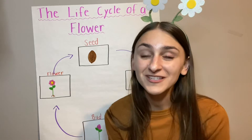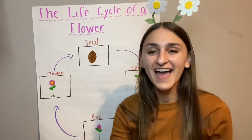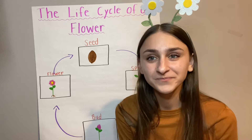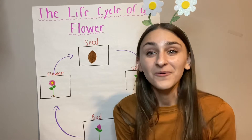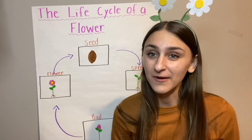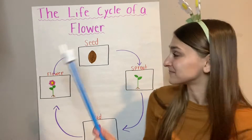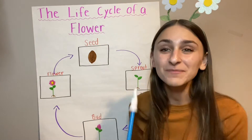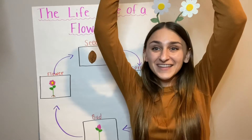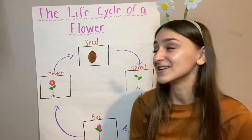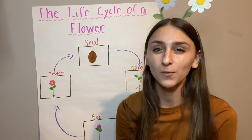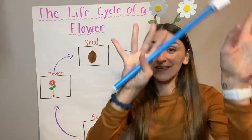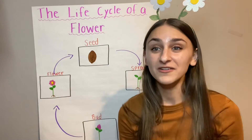Now I have a question for you. How do flowers grow? Well, we need to plant something in the ground. What do we need to plant? A seed. Can you pretend like you're a seed? And then, we need to put something on that seed. What do we put on the seed? Some water, right? You water the seed.